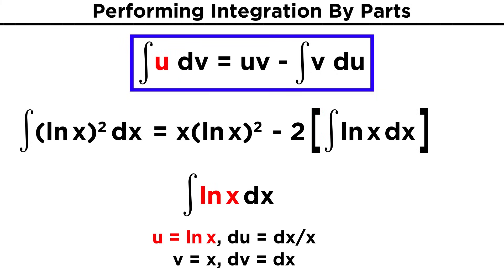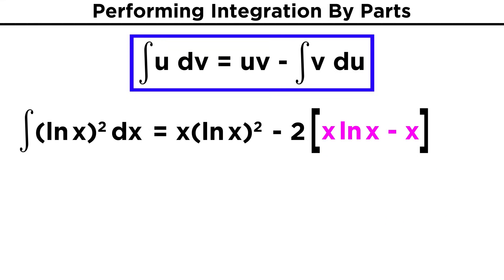Just as before, u will be ln(x), dv will be dx, and that makes du equal to dx over x, and v equal to x. So all still within these brackets, we can rewrite this integral as x ln(x) minus the integral of dx. That integral becomes x, so it's x ln(x) minus x. And then we can distribute this two from before across this term, which will all together give us x (ln(x))² minus 2x ln(x) plus 2x plus c.